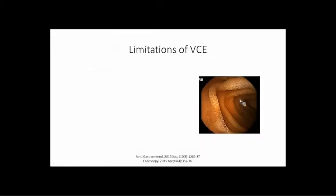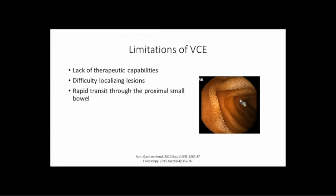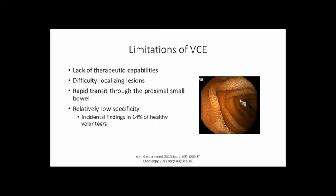The capsule gives us really good quality images of the small bowel, but it's not perfect. The biggest limitation is we lack therapeutic capability — we just see it. We also have difficulty localizing lesions, because the capsule doesn't travel at a constant rate; it flies through some parts then slows down. If we see a lesion we can't exactly tell where it is. Also, the duodenum is not well-evaluated by the capsule, which is why we rely on push endoscopy for the proximal small bowel. Specificity isn't great — studies found incidental findings in 14% of healthy people.